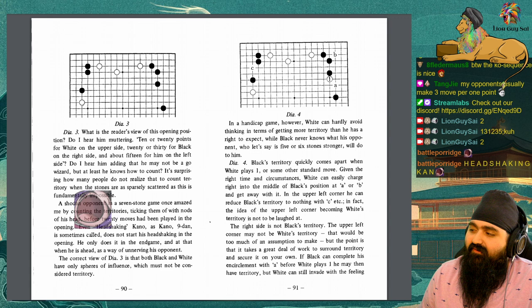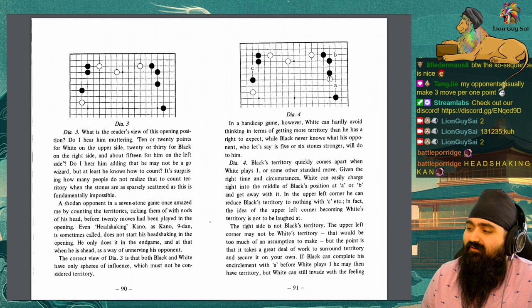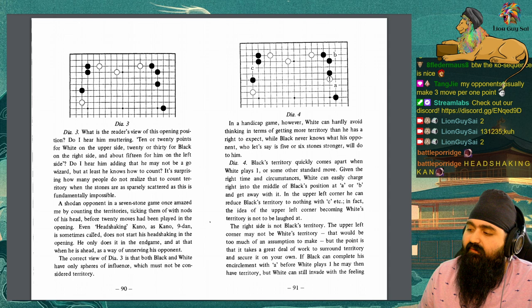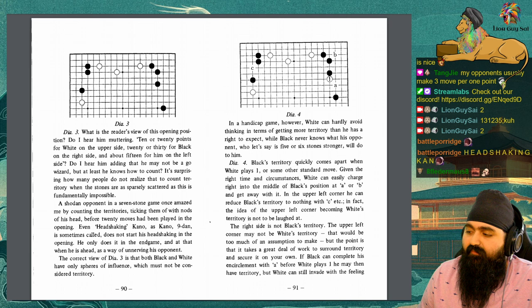Diagram 4. Black's territory quickly comes apart when white plays 1, or some other standard move. Given the right time and circumstances, white can easily charge right into the middle of black's position at A or B and get away with it. In the upper left corner, he can reduce black's territory to nothing with C, etc. In fact, the idea of the upper left corner becoming white's territory is not to be left at. The right side is not black's territory. The upper left corner may not be white's territory, that would be too much of an assumption to make, but the point is that it takes a great deal of work to surround territory and secure it as your own.